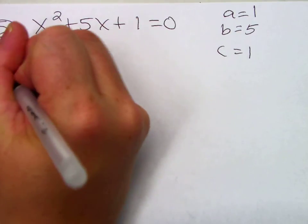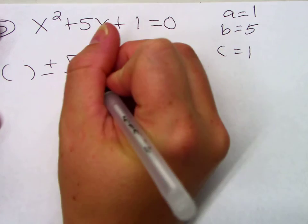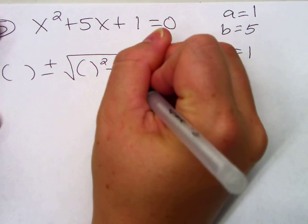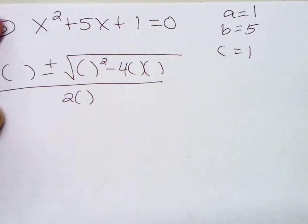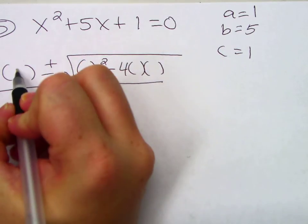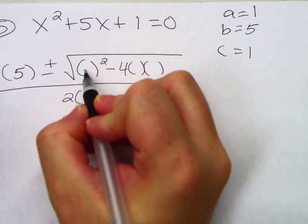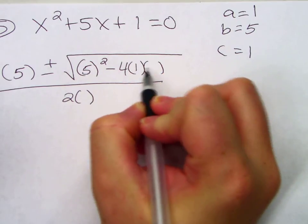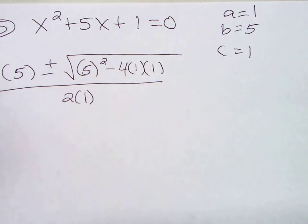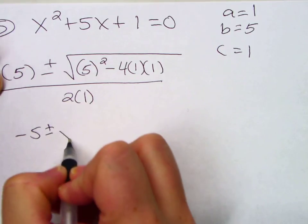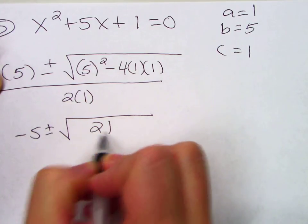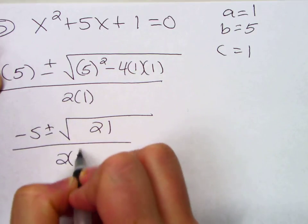So, negative B plus or minus the square root. B squared minus 4AC all over 2A. Negative B. B squared minus 4AC all over 2A. Negative 5 plus or minus the square root. Put that all in the calculator.